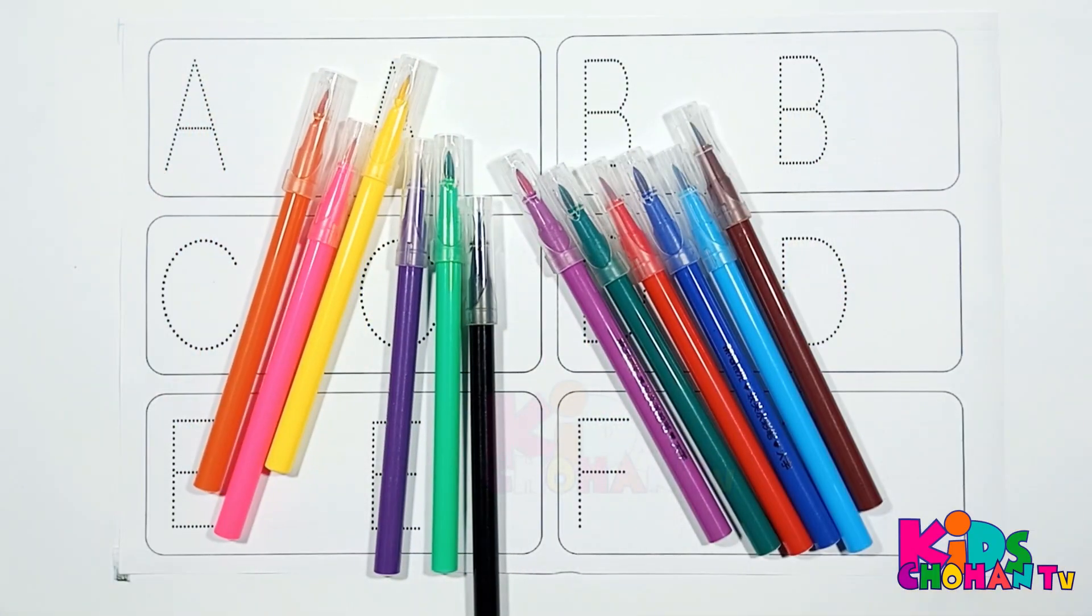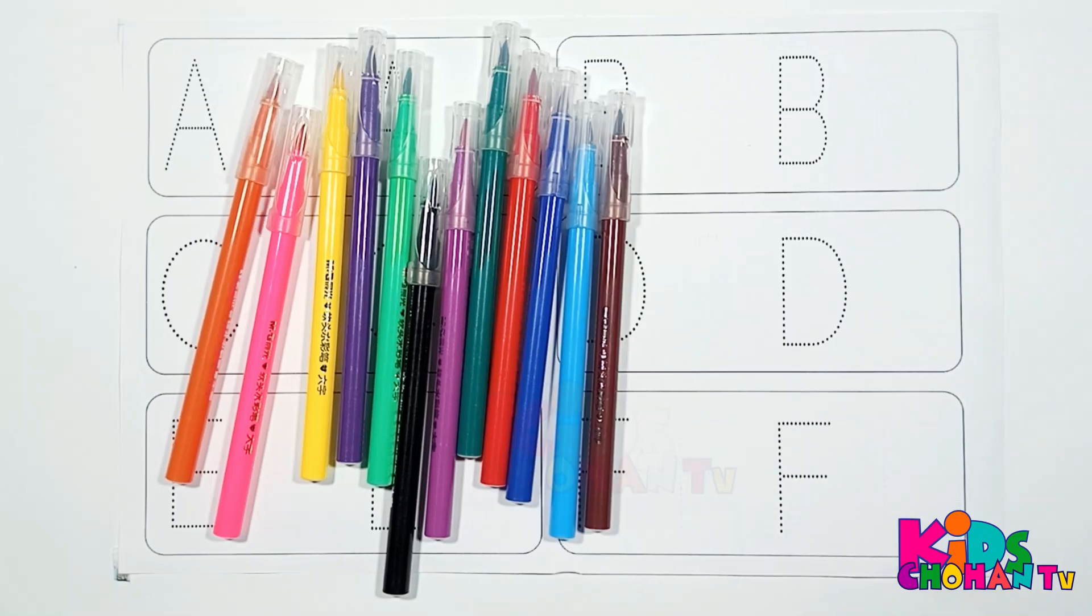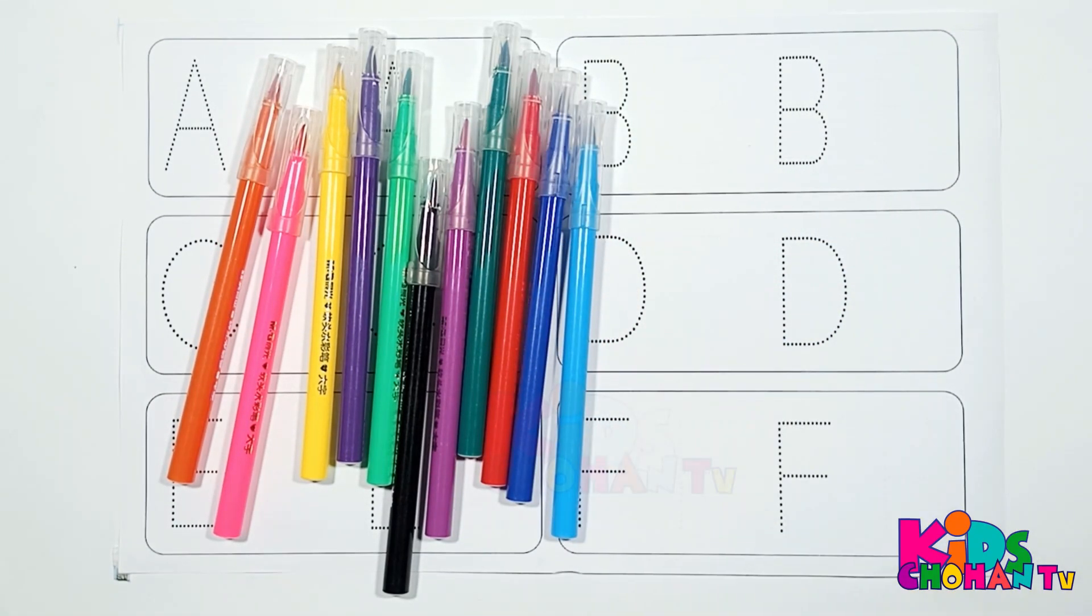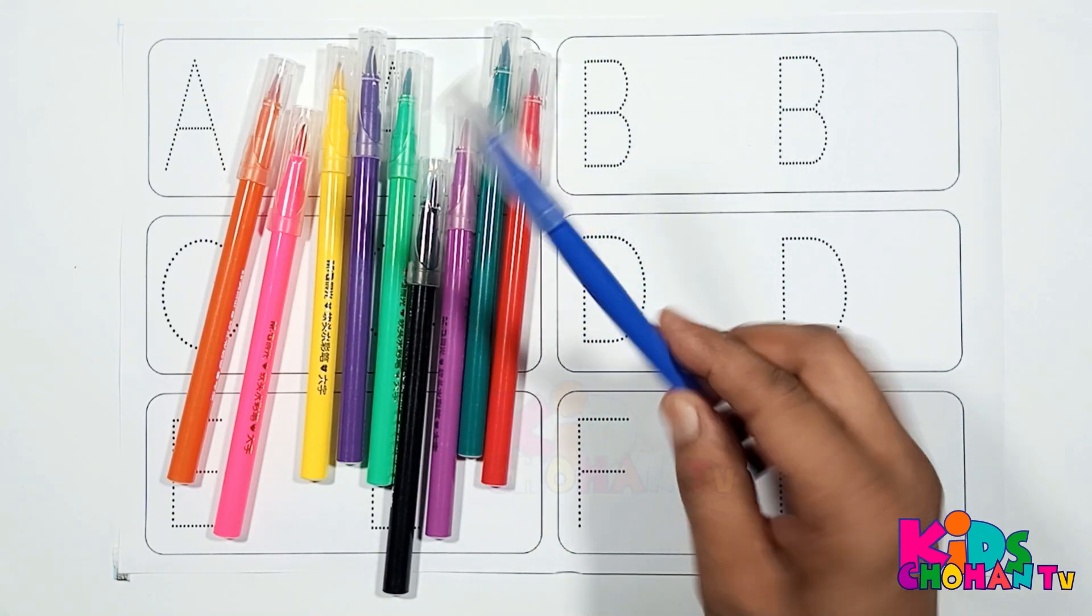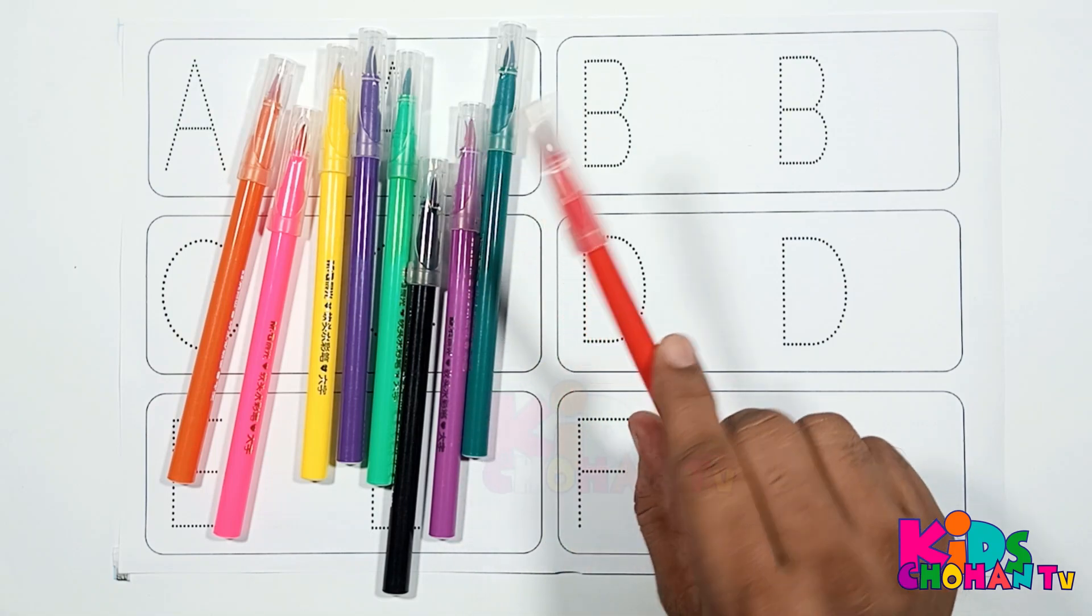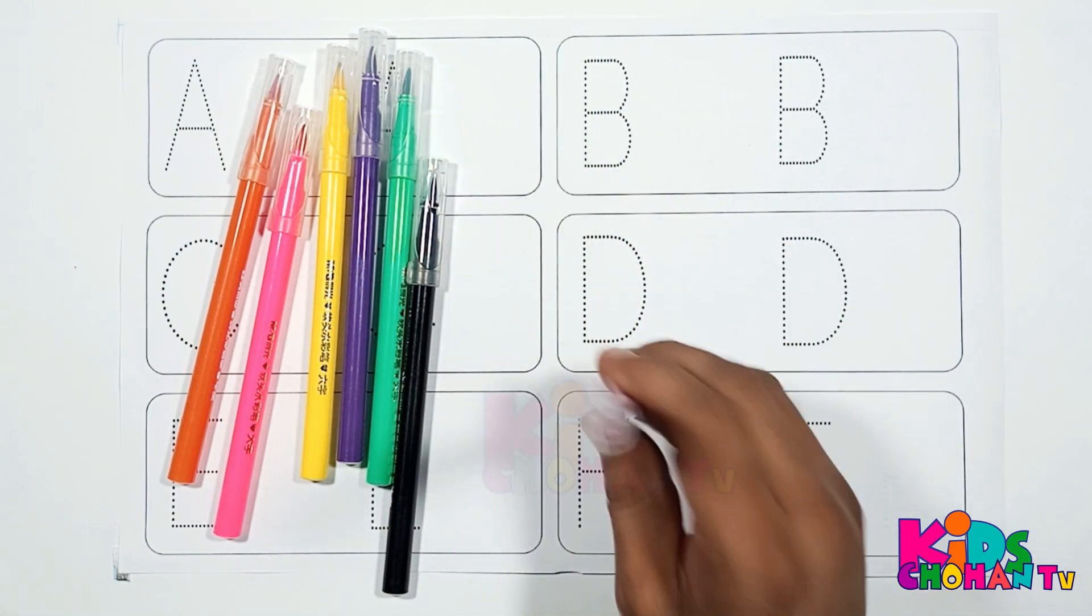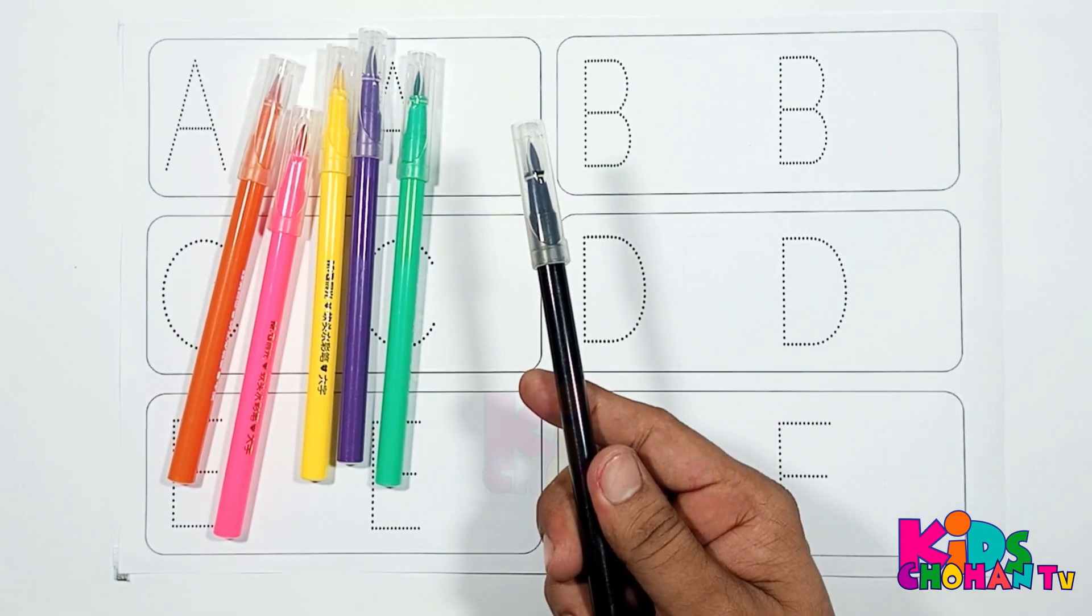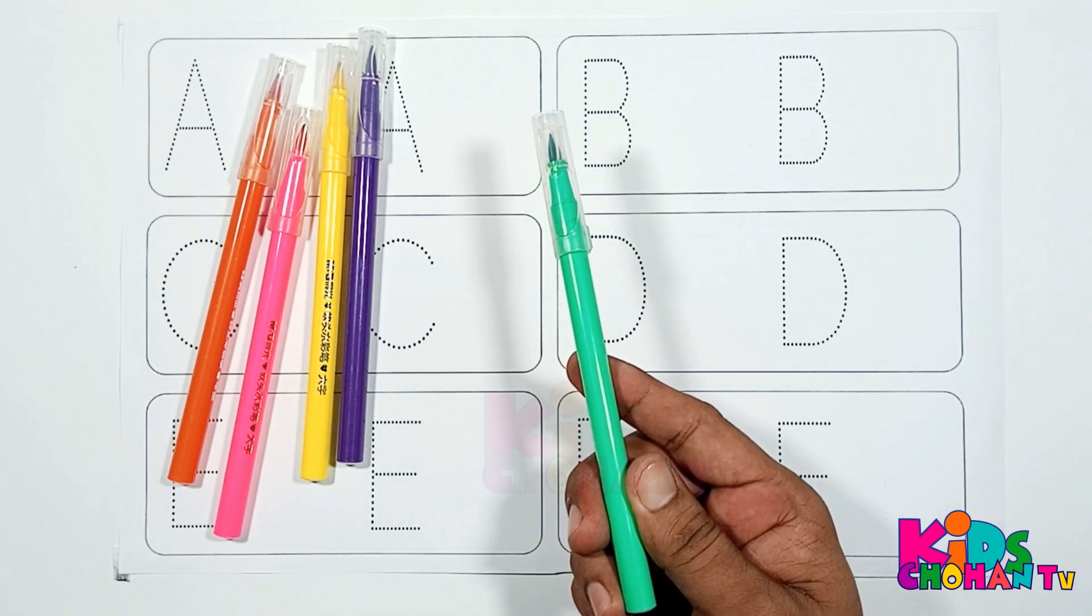Hello kids, welcome back! Let's learn color names. This is brown color, sky blue color, blue color, red color, green color, purple color, black color, and light green color.